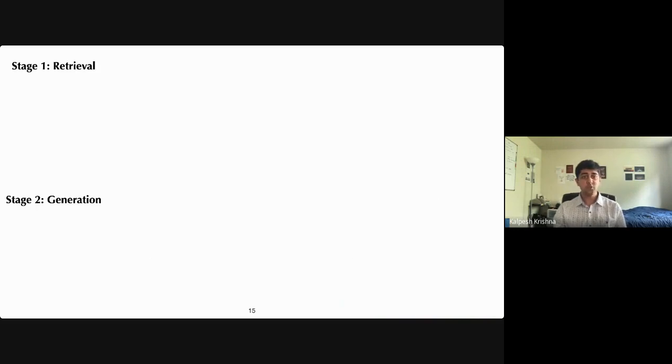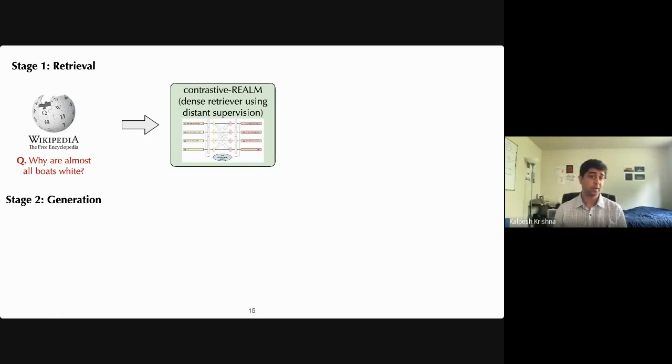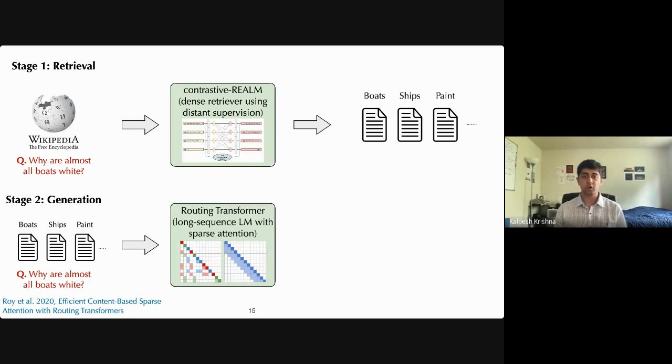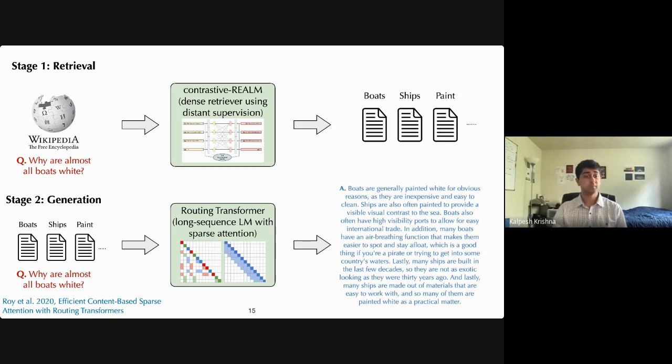So how do we build a system for this task? So at a high level, we adopt a two-stage retrieve and generate pipeline. Given a question in Wikipedia, we first parse them through a retriever that we built, called Contrastive Realm. This gives us a number of Wikipedia articles which are relevant to the question. In this case, articles about boats, ships, and paint. Next, we concatenate all these retrieved documents together, along with the question. Since this can become a pretty long sequence, we pass it through a long-range language model, called the routing transformer model, which gives us our final output generation.